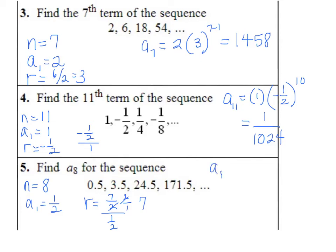Find a sub 8: 0.5 times 7 to the seventh power, and that turns into something really big — 411,771.5. Be sure you take the next term divided by the previous to find r.